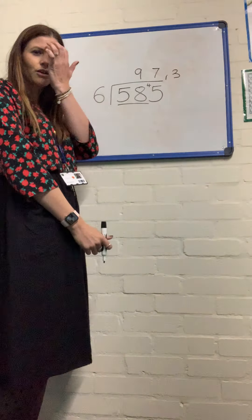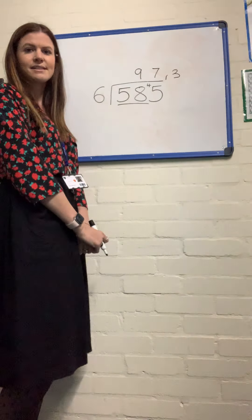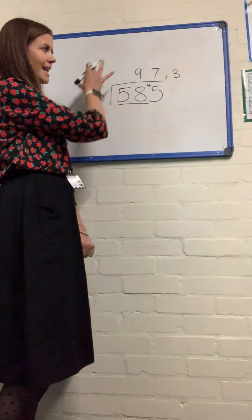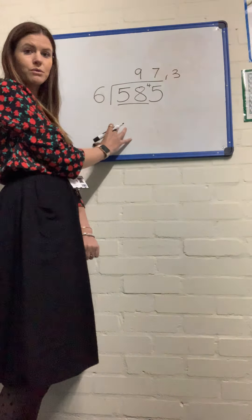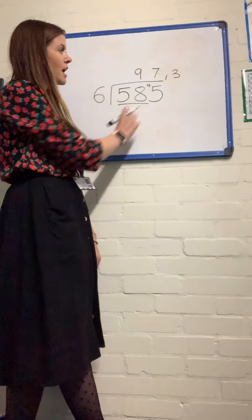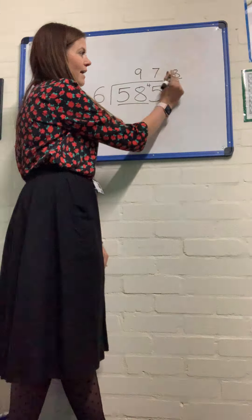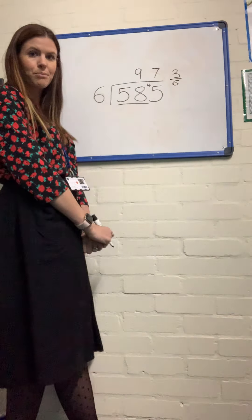But in year 6, we need to look at how we can leave that answer as a decimal. There are two ways of finding the decimal. With a question like this, it's easier to start with the fraction. So 3 over 6 is what that remainder actually represents.